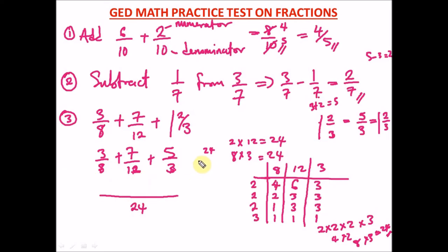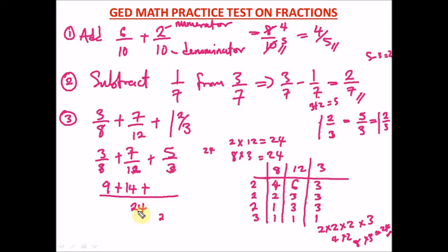Now solving the fractions with LCM 24: 24 ÷ 8 = 3, so 3 × 3 = 9. 24 ÷ 12 = 2, so 2 × 7 = 14. 24 ÷ 3 = 8, so 8 × 5 = 40. We now add 9 + 14 + 40 over 24.